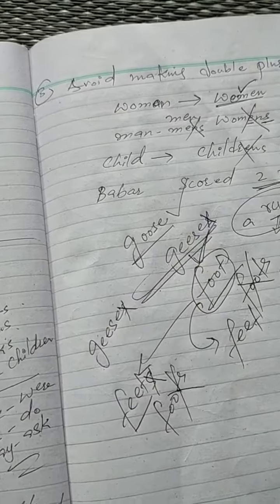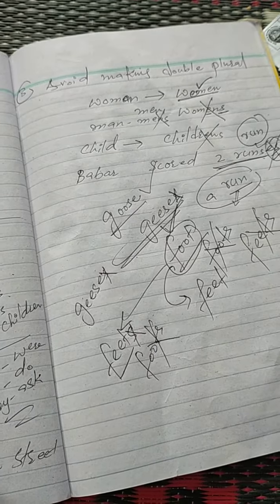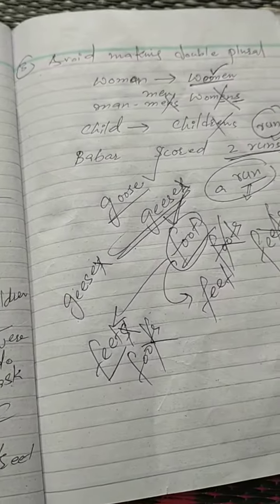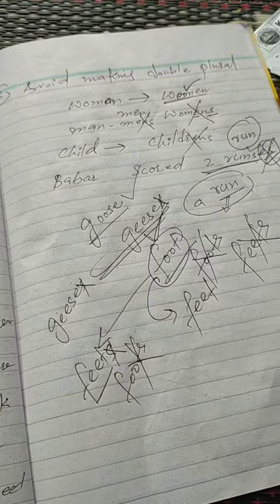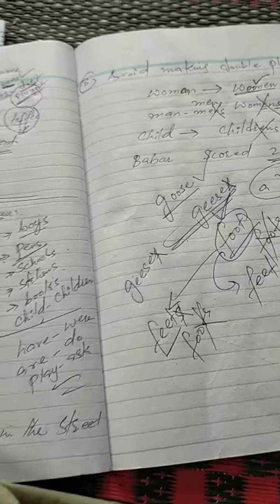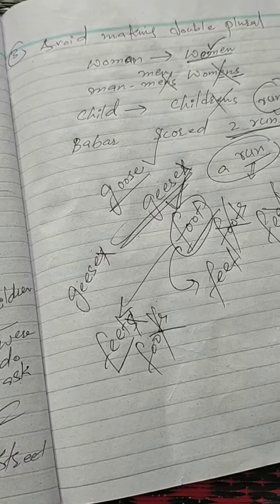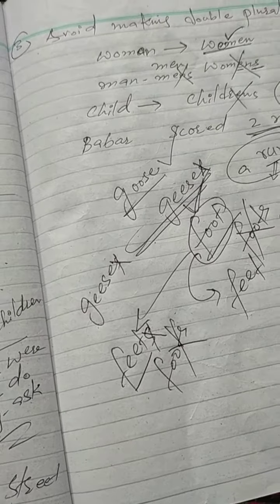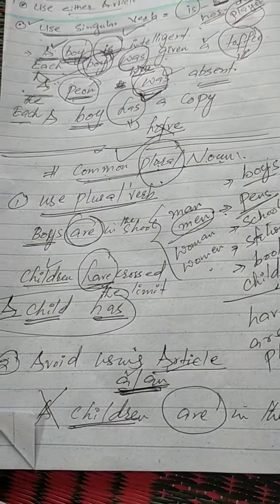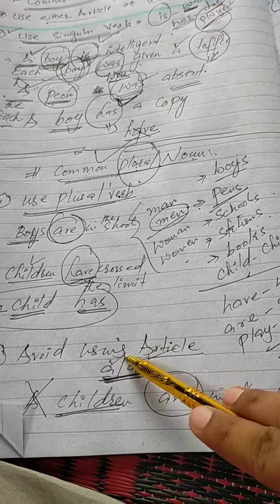We have covered two topics so far. Under kinds of noun, we covered proper noun and its usages, and then common noun and its two kinds: common plural noun and common singular noun. Common singular noun was covered before today, and common plural noun was discussed today. There are three usages of common plural noun: use plural verb, avoid using the article 'a/an'...